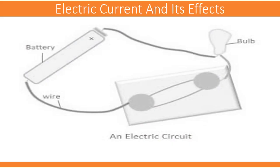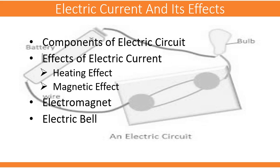Next chapter is Electric Current and Its Effects. Subtopics of this chapter are components of electric circuits and effects of electric current, in which we will see heating and magnetic effects. Next subtopic is electromagnet, where we will learn how electromagnets are made and their applications in day-to-day life. Finally, we will study the working of electric bells.